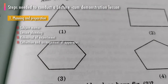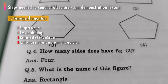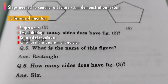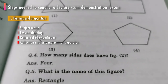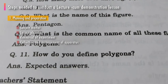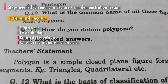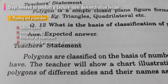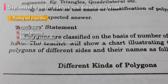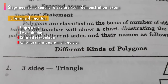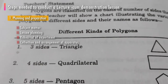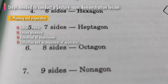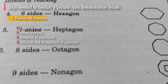Before actually demonstrating the experiment to a class, the experiment should be rehearsed under the conditions prevailing in the classroom. In spite of this, something may go wrong at the actual lesson, so reserve apparatus is often useful. The apparatus has to be arranged in a systematic manner on the demonstration table. For the success of the demonstration method, a teacher has to prepare himself as thoroughly as possible.